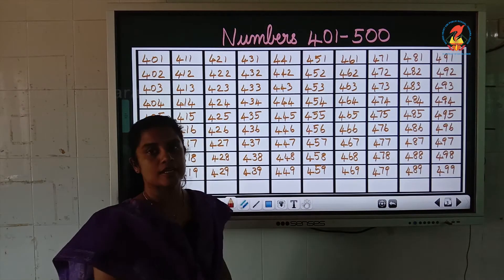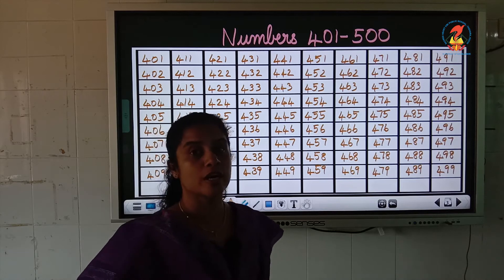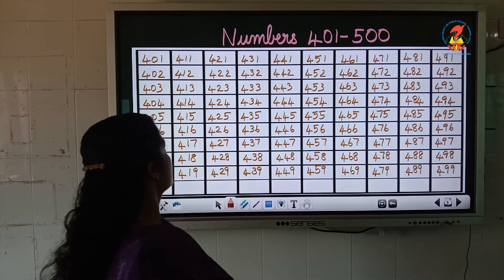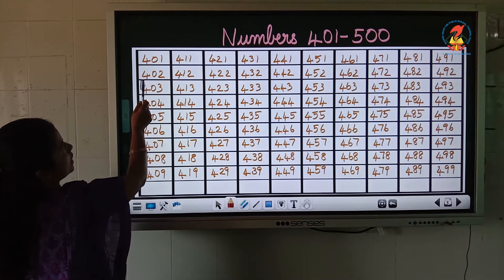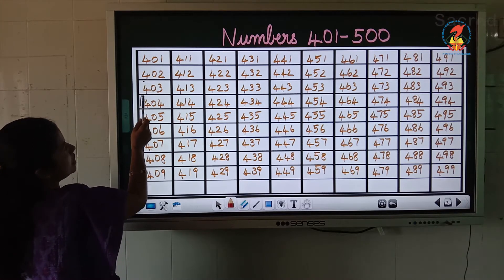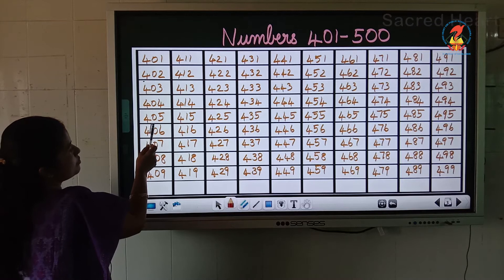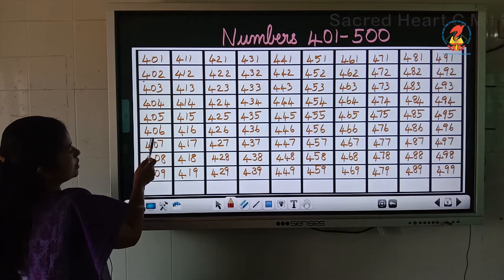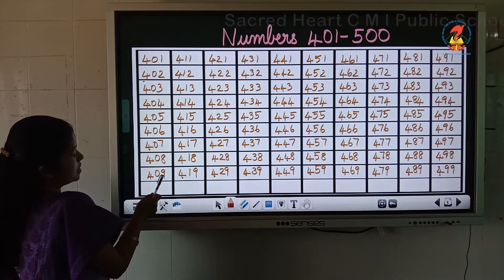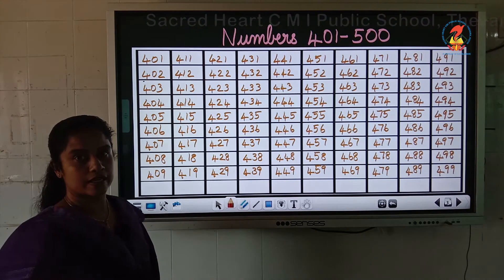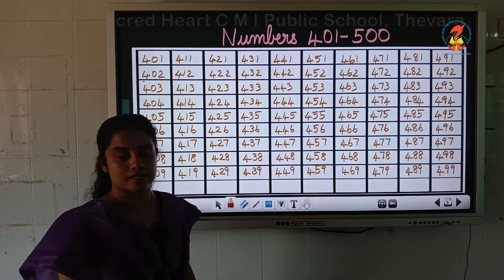Now we will study numbers from 401. What is this number? 401, 402, 403, 404, 405, 406, 407, 408, 409. After 409, it is 410.